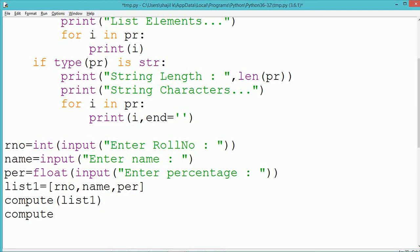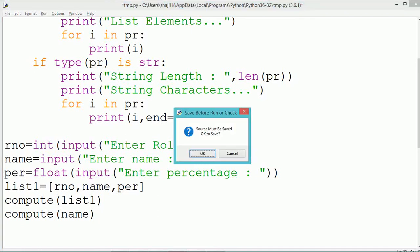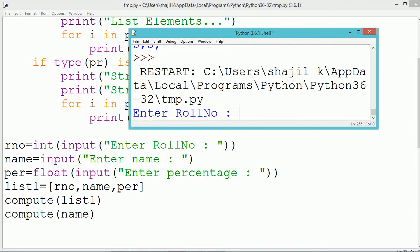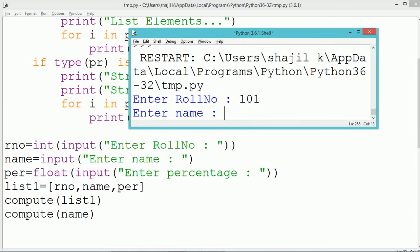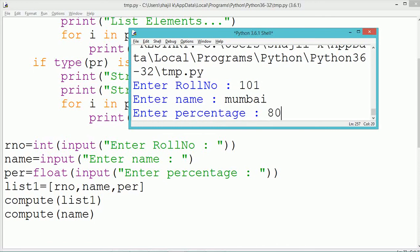Similarly, we call the compute method with a string variable. In the program, we use a string variable name to store the user name, so the compute method is called in this case with two different data types: one with a list and another with a string variable. Execute and see the program output.